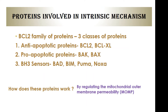The whole process of the intrinsic mechanism is mediated and regulated by the BCL2 family of proteins. This BCL2 family contains three classes: number one is anti-apoptotic proteins — BCL2 and BCL-XL; number two is pro-apoptotic proteins — BAK and BAX; number three is the BH3 sensors — BAD, BIM, PUMA, and NOXA.